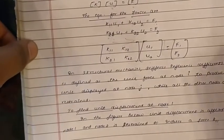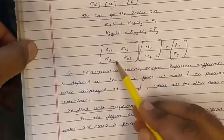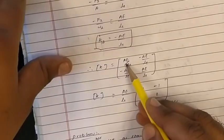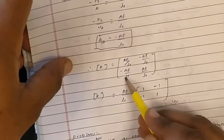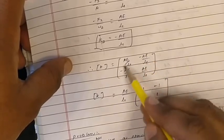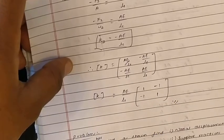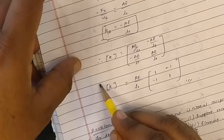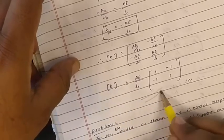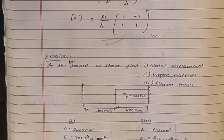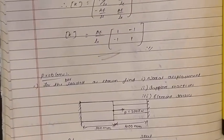Now substituting k11, k12, k21, and k22 into the matrix equation and factoring out AE/L, the stiffness matrix for a bar element is: K = (AE/L) × [1, −1; −1, 1]. This is the element stiffness matrix for a 1D bar element. Based on this stiffness matrix, we will solve numerical problems in the next class. Thank you.